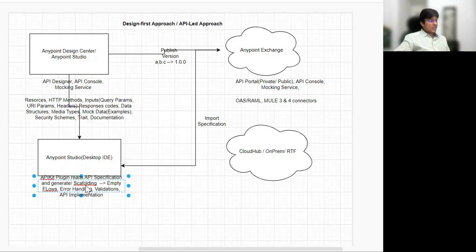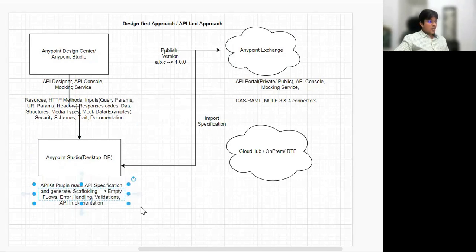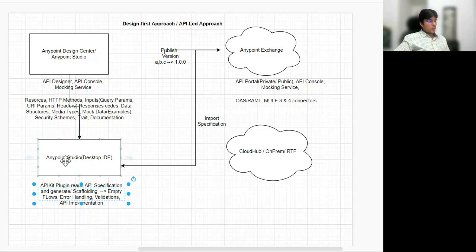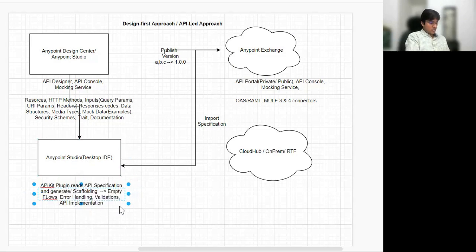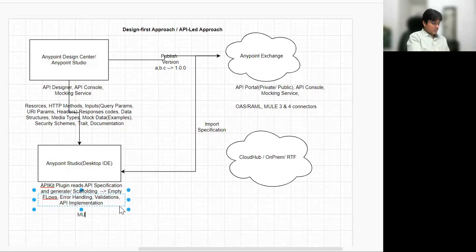Now here we'll be connecting to actual source and actual target, because in the API specification we just mentioned mock data. Now here we'll actually be connecting to our source and target. Those could be your SFTP, Salesforce, SAP, or database — and similarly the target system could also be a similar set of systems. Now, once you are done, you do the testing — MUnit testing, code testing.